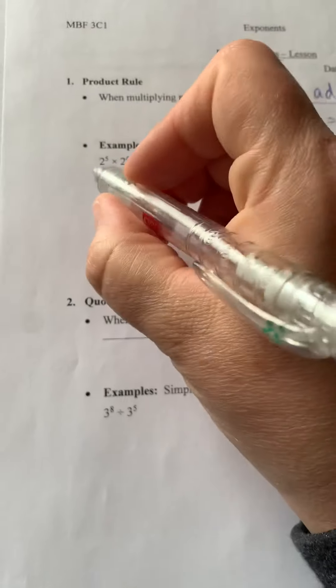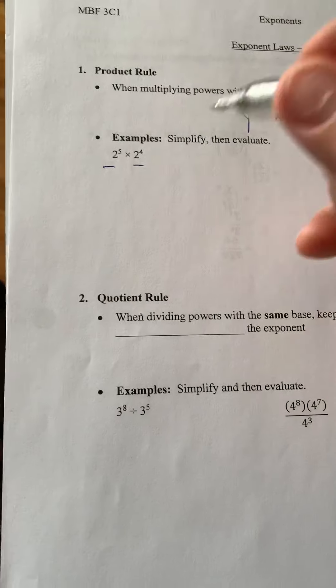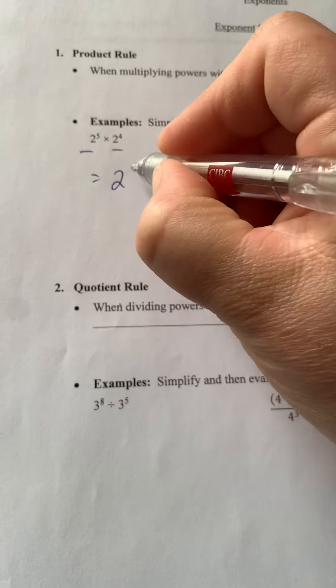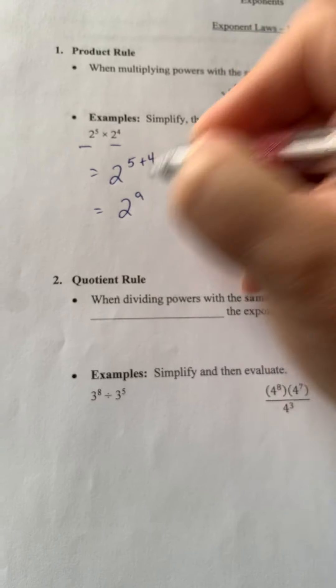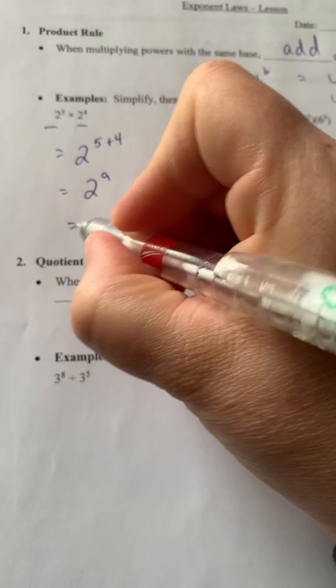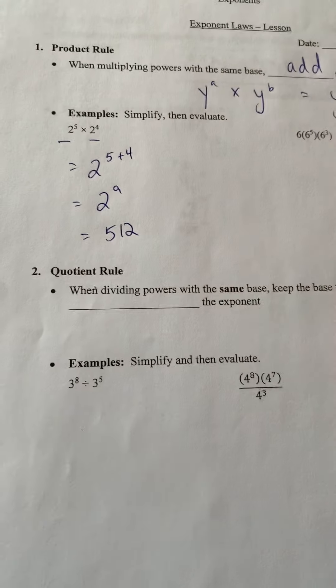That's it. So here we have our bases are the same. So what I'm going to do is say this is 2 to the power of 5 plus 4, which equals 2 to the power of 9, which I then put in my calculator and I get 512.